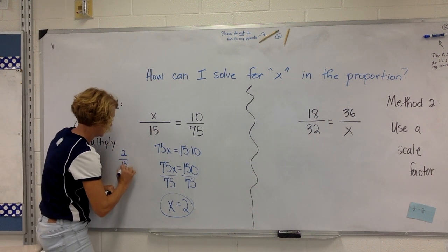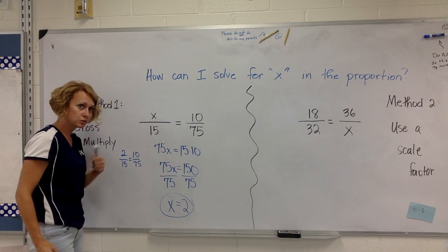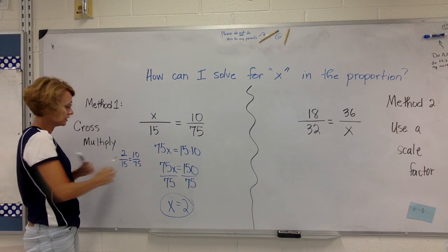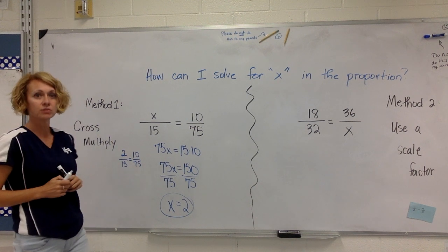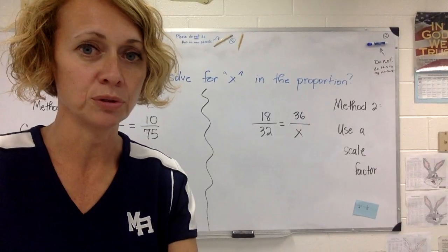2 over 15, is that equivalent to 10 over 75? Check those cross products. 2 times 75 is 150 and 15 times 10 is also 150. So you can use cross multiplication to help you solve a proportion.